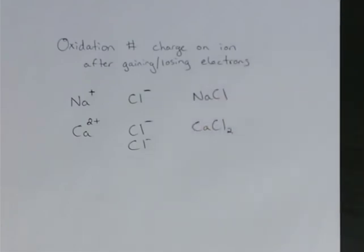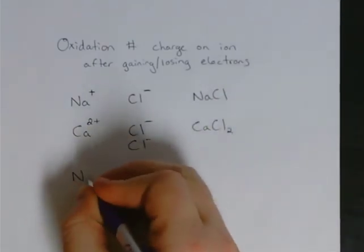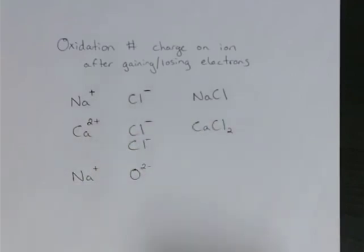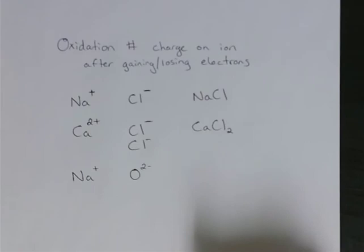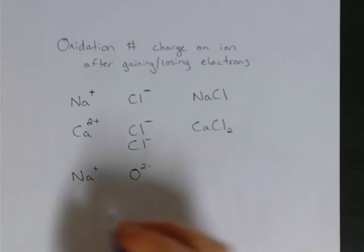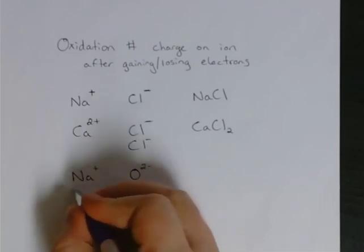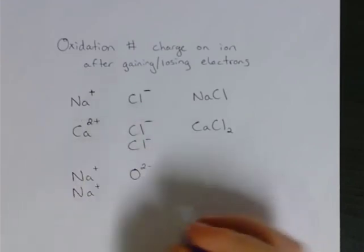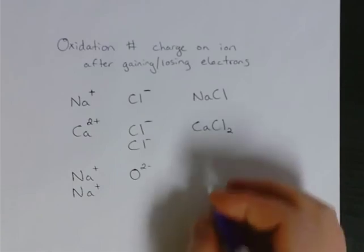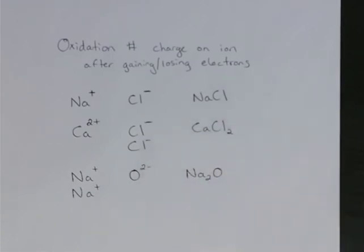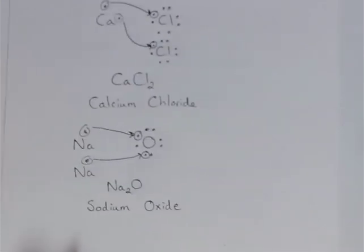For sodium oxide: sodium is the 1+ ion, and oxygen is a 2− ion — it has six valence electrons and is trying to gain two electrons to reach a total of eight; gaining two negatives makes it 2−. To get a total charge of zero, I need two Na⁺ and one O²⁻. The formula is Na₂O, just like we got before by modeling with electron movement.